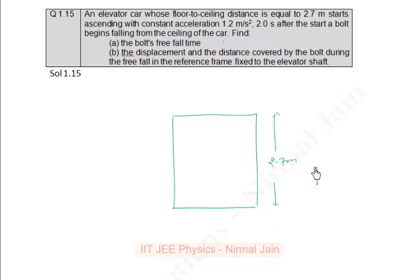Starts ascending in upward direction with acceleration of 1.2 meter per second squared. Two seconds after the start, a bolt begins to fall from the ceiling of the car. So we have to find in part a the free fall time of the bolt.